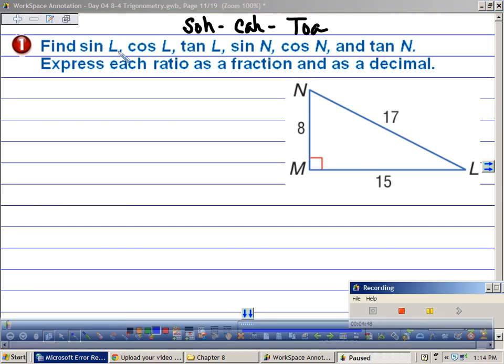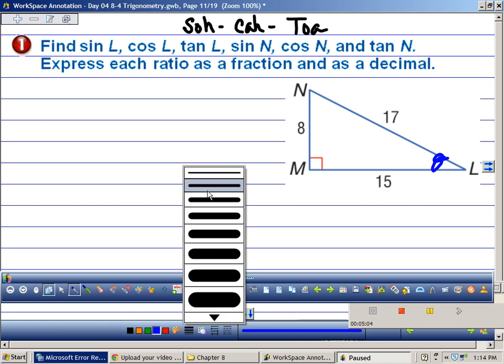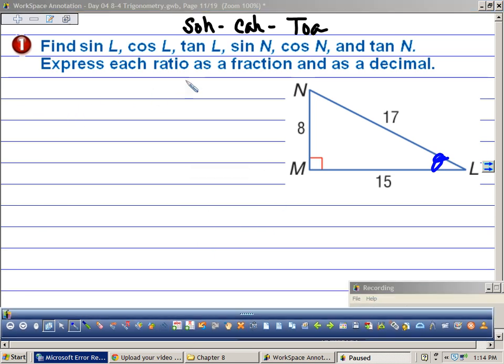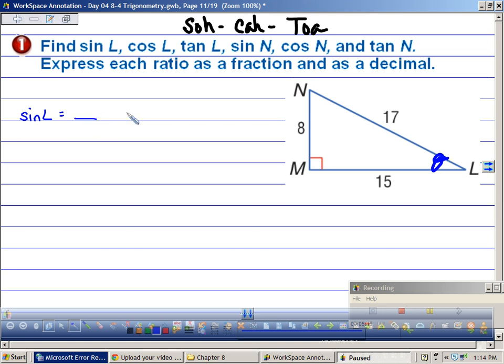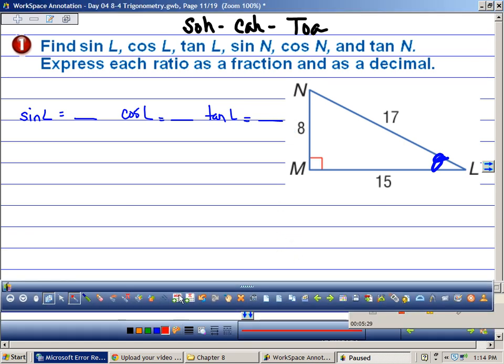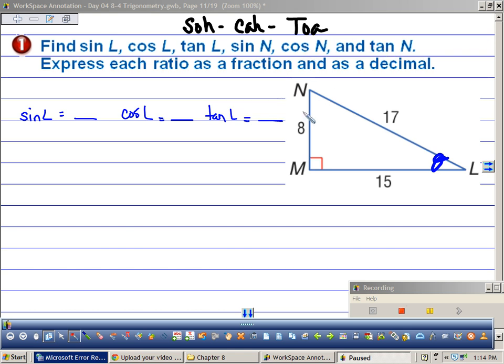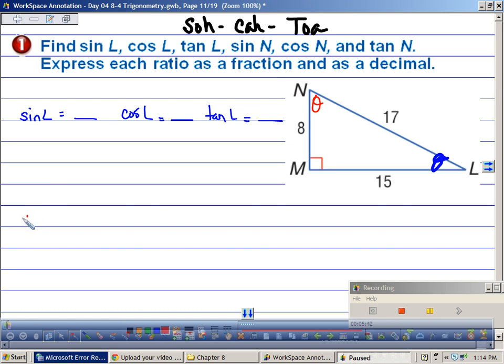Okay, so this is find sine of L, cosine of L, and tangent of L. Also, so that's talking about this angle right here. So I'm going to find the sine of L. I'm going to find the cosine of L, and I'm going to find the tangent of L. The next part of this problem asks me to find the cosine of N, the tangent of N, and the sine of N. So that would be this side. So when I'm looking at this angle N, I'm also going to find the sine of N, the cosine of N, and the tangent of N.